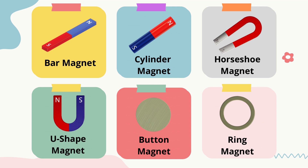The third one is the horseshoe magnet. The fourth one is the u-shaped magnet. The fifth one is the button magnet. And the last one is the ring magnet. You have to remember there are six shapes of magnets that you need to know.